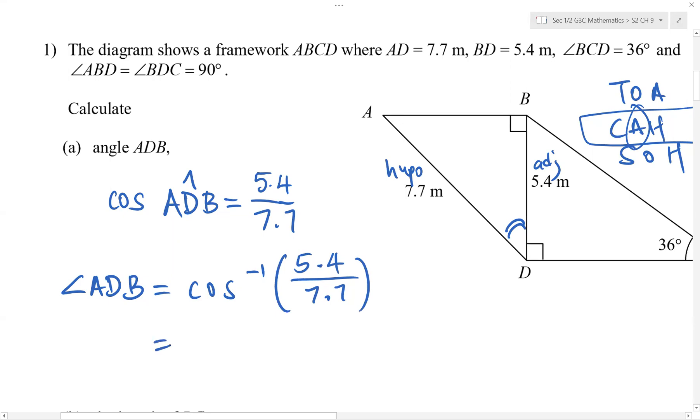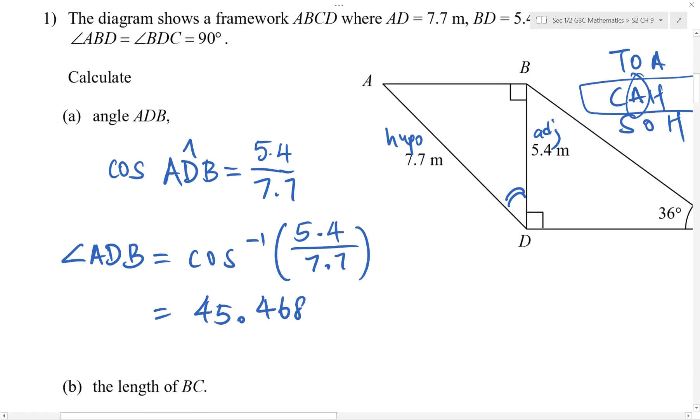And get the answer. 5.4 divided by 7.7. 45.468. So this is in degrees. When it is in degrees, round off to one decimal place. Not 3SF.